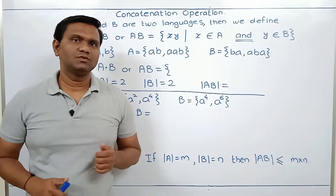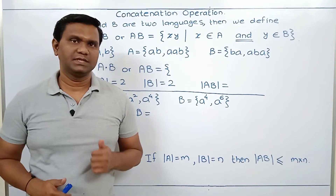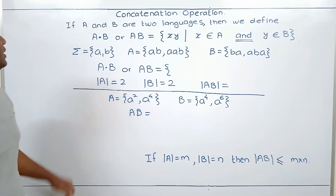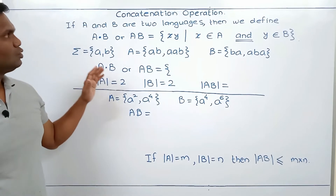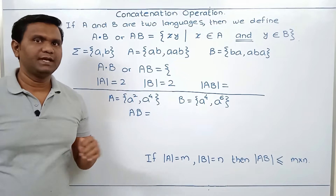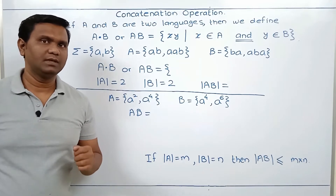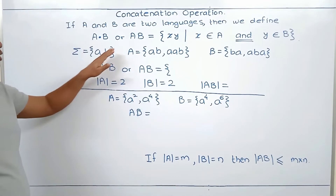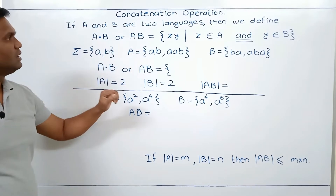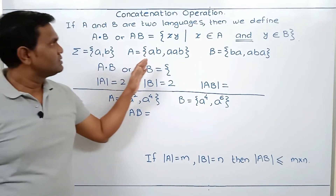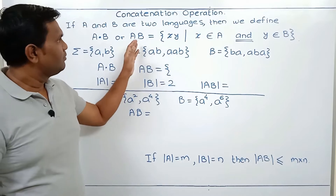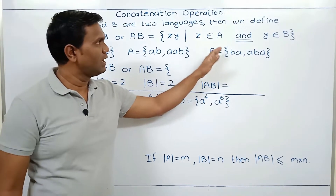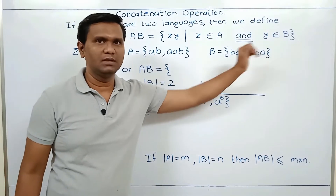Let's start with operations on strings and languages. The first operation is concatenation. If A and B are two languages, then we define concatenation of A and B, which is denoted as A.B or simply AB. The definition is: AB equals {XY such that X belongs to A and Y belongs to B}.